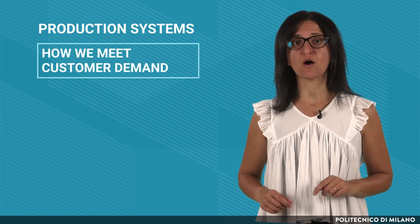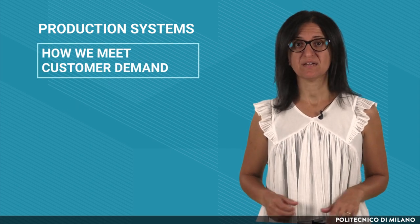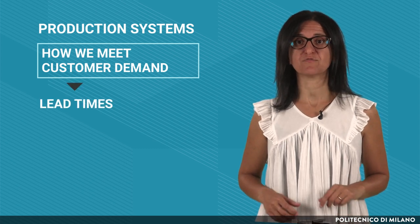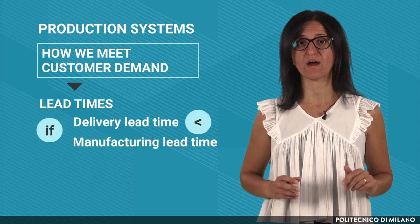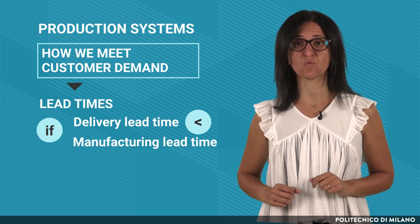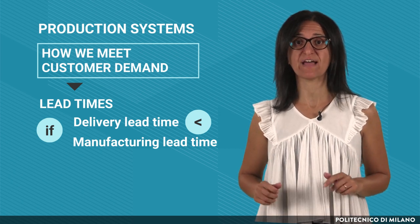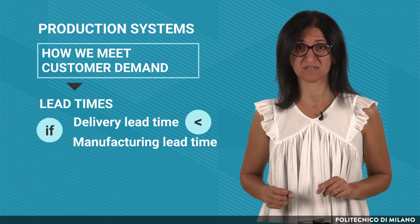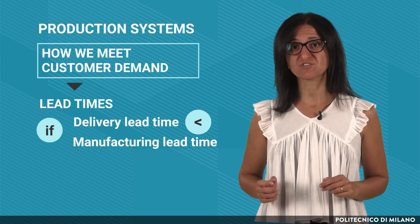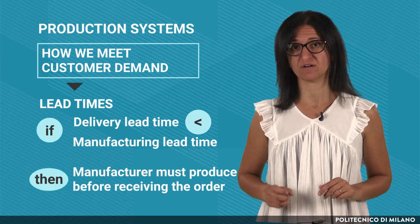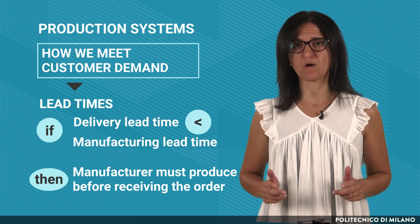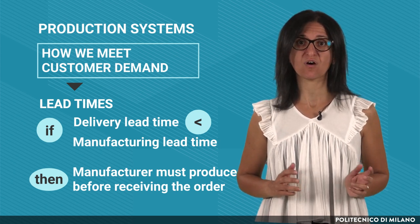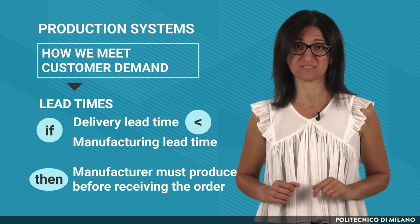First, how we meet customer demand. The choice depends on the lead times. If the delivery lead time required by the customers is lower than the manufacturing lead time, i.e., the time required to make the products, the manufacturer must produce before receiving the orders. Otherwise, he can decide whether to produce before or after receiving the orders.